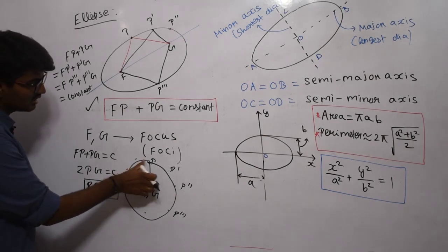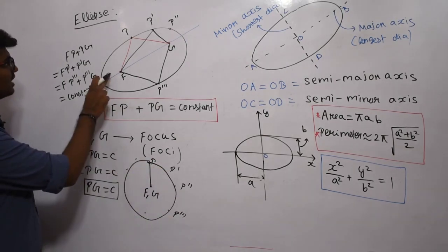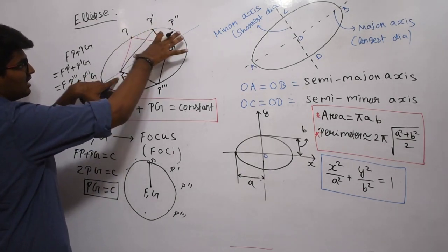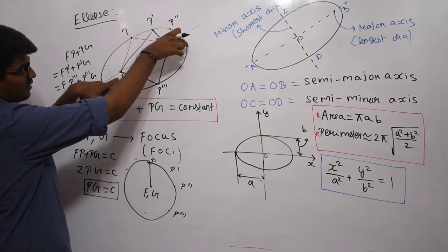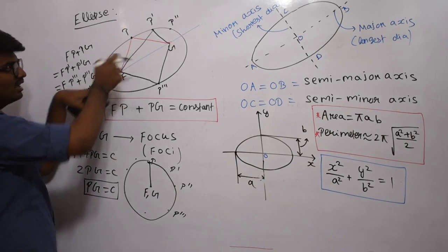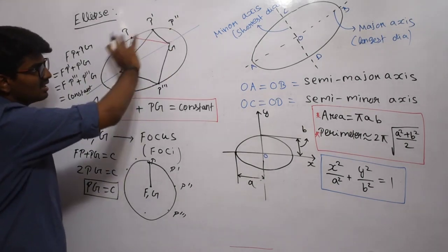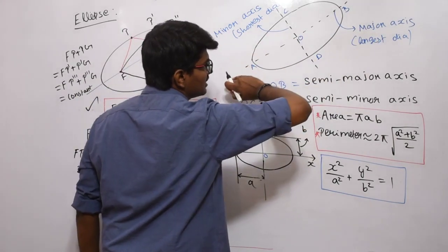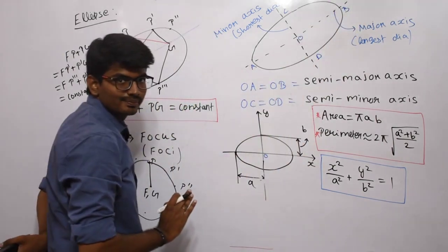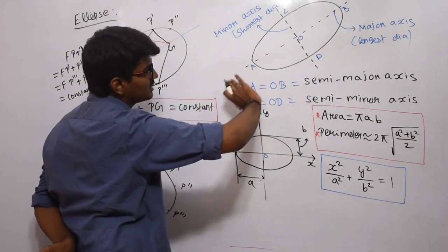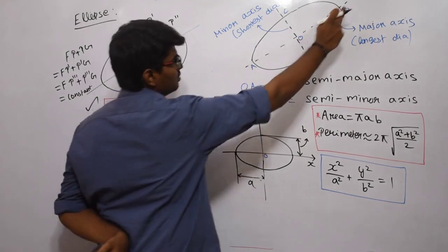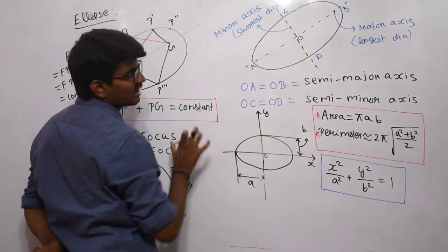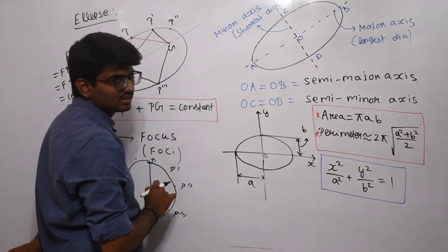From F to P it is getting increased until a certain point, and P to G is getting decreased. After that, P to G will get increased and F to P will get decreased — the diameter keeps changing everywhere. The major axis is the axis having the largest diameter. The largest distance in an ellipse is said to be the major axis, from A to B. The distance C to D, which is the shortest diameter, is said to be the minor axis.